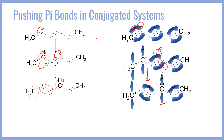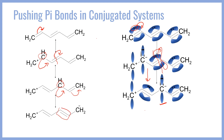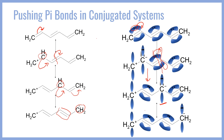We can do this once more — going back to our structure on the left, we can take this negative charge and push it one more time onto the carbon all the way on the right-hand side. That gives us one more resonance structure where there is now a bond between those two carbons, which did not originally exist in our first structure, and the negative charge is now on the carbon on the right. In an orbital sense, the same process repeats: this orbital attacks the next pi bond, breaks it, and pushes the electron density onto that carbon, forming a new pi bond between those two carbons with the formal negative charge placed in a p orbital on the rightmost carbon.